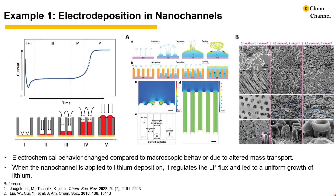Some technologically relevant applications include lithium dendrite suppression for lithium metal-based batteries. In this study, Liu, Cui, and co-workers found homogeneously distributed ion flux in all-polyimide nanochannels with diameters of 350 nm, leading to uniform growth without the formation of dendrites. This simulation was supported by scanning electron microscopy images of the electrodeposited lithium, where figures A through C are a flat current collector and D through L are deposited on a nanochannel-modified electrode.